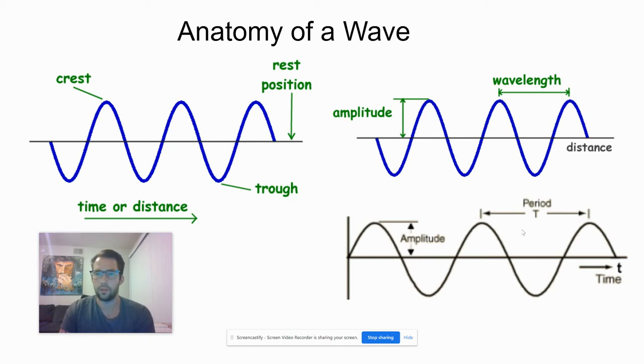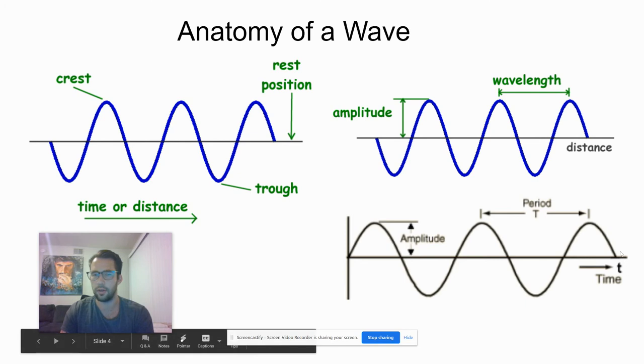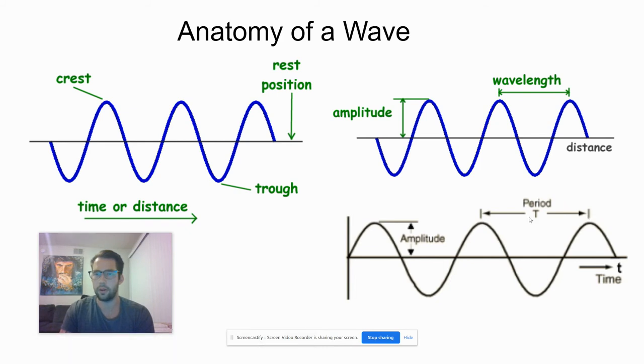Period is similar to wavelength because it covers from one crest to another crest, but now instead of the x-axis being distance, it's now time. So if the x-axis is time, then from one crest to the next crest, that's going to be our period, and it's going to have the units of seconds.